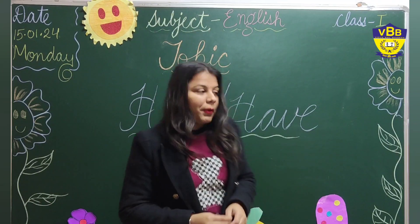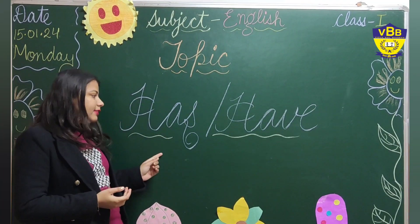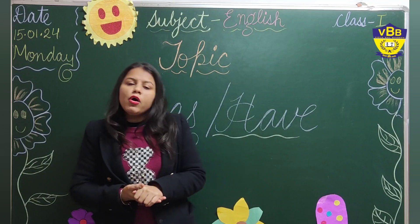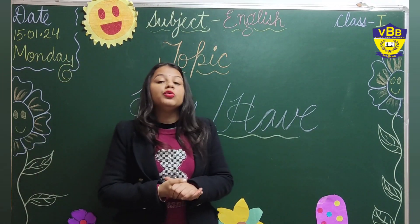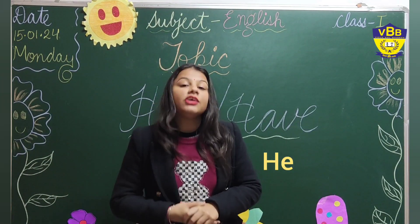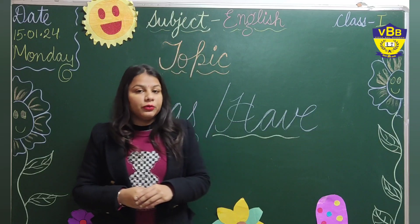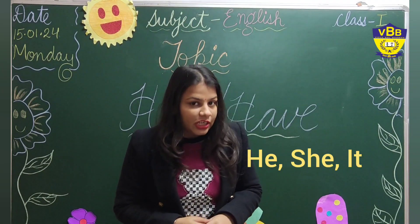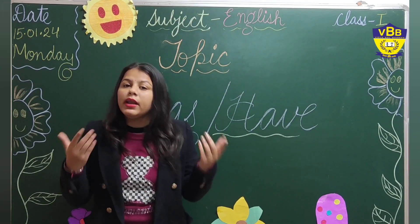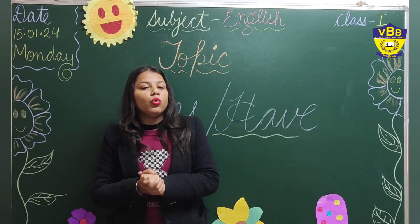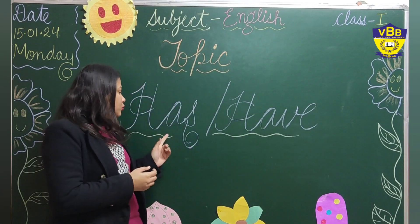The name of the topic is 'has' and 'have.' Today we are going to learn about has and have. Now when do we use has and have? We use has with he, she, it, or any singular thing — any one person, any one thing. When we are talking about only one single person, one single thing, or any animal, then we use has.